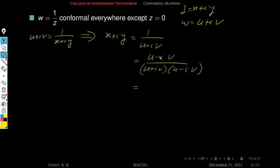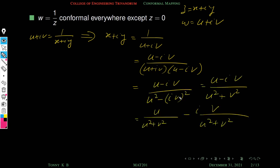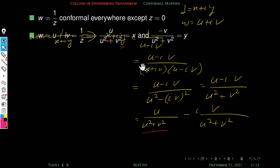Multiplying numerator and denominator by the conjugate (u - iv), the denominator becomes u² + v² (since i² = -1). The real part is u/(u² + v²) and the imaginary part coefficient is -v/(u² + v²). Comparing real and imaginary parts: x = u/(u² + v²) and y = -v/(u² + v²).